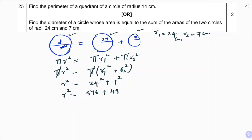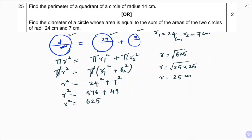So r² = 576 + 49 = 625. Therefore r = √625 = 25, since 25² = 625. So the radius is 25 centimeters. They are asking for the diameter, so diameter = 2 × 25 = 50 centimeters.